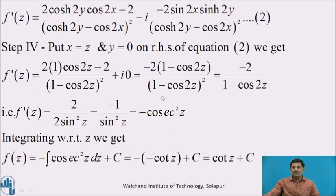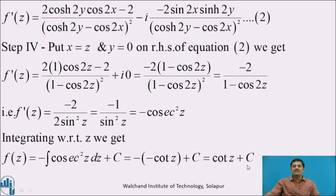The right-hand side is now obtained as a function of z. Integrating with respect to z: f(z) = -∫cosec²z dz + C. Since the integral of cosec²z is -cot z, we get f(z) = cot z + C. This is the required analytic function.